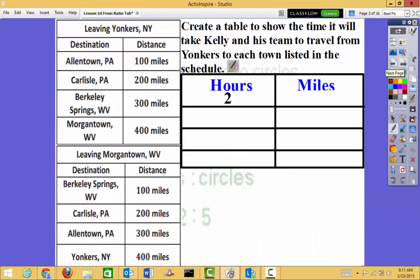We need to create a table to show the time it will take Kelly and his team to travel from Yonkers to each town listed in the schedule. Let's look. If I start with 2 hours, how far will I go? Well, let's look here. Before we do miles, let's look. I know the total is going to take 8 hours. So what do we have? Well, 2, 4, 6, 8.